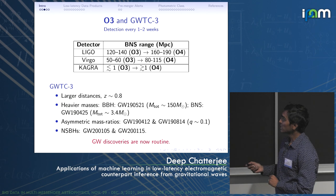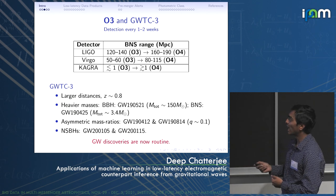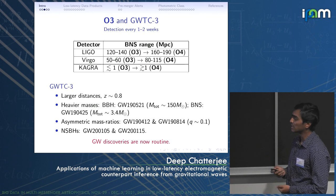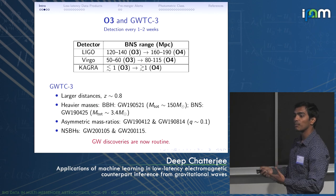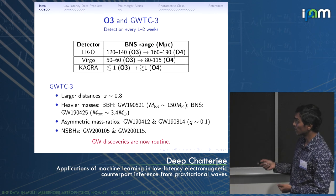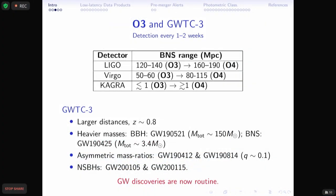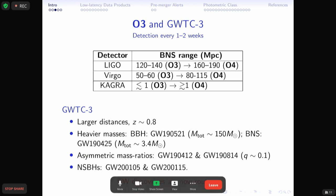During O3, we had a detection every one to two weeks on average, because the detectors were much more sensitive compared to the previous observing run. The BNS range — the binary neutron star inspiral range, the distance to which the detectors are sensitive to a standard 1.4–1.4 solar mass binary neutron star — was 100 to 140 megaparsecs for the LIGO detectors, and is expected to go up to 160 to 190 during the next observing run.